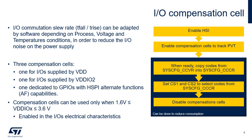By default, the compensation cells are disabled and a fixed code is applied to all input/outputs. The following sequence should be implemented to enable them: 1. The HSI must be enabled, as it is used by the compensation cells. 2. Enable the compensation cells in the SYSCFG compensation cell control status register. 3. When enabled, the compensation cell tracks the PVT and the 8-bit code is available in SYSCFG CCVR once the ready bit is set. 4. If the code selection bit is cleared, the input/output receives the code from SYSCFG CCVR. To reduce power consumption, it is recommended to copy the code from SYSCFG CCVR, then set the code selection bit and disable the compensation cell.